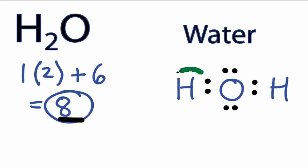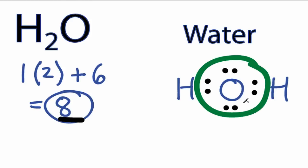We can see that each hydrogen has 2 valence electrons, so their outer shells are full. And the oxygen has 8 valence electrons, so it has an octet and its outer shell is full.